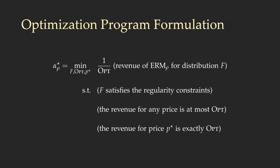Our first step is to express the ratio alpha-star_rho as a solution to an optimization program. The program optimizes over the distribution F, the value of the optimal revenue, and the optimal reserve price P-star. The objective function equals the revenue that the rounded ERM achieves when the input follows distribution F. The program also includes constraints that F should be regular, and that the revenue for this distribution is exactly the optimum—at most optimum for any price and at least optimum for price P-star.